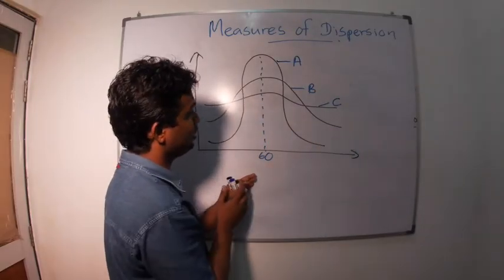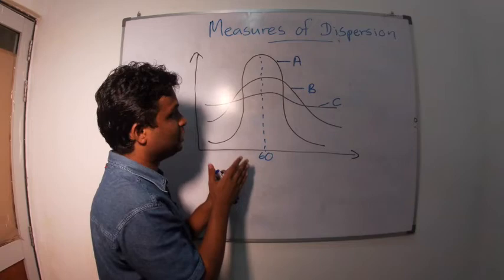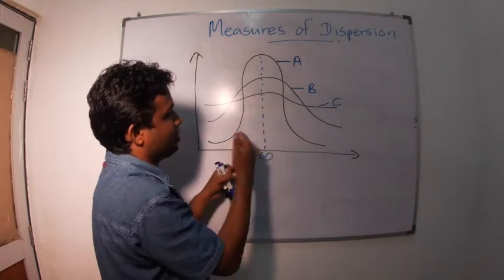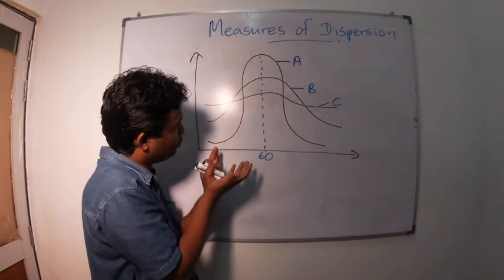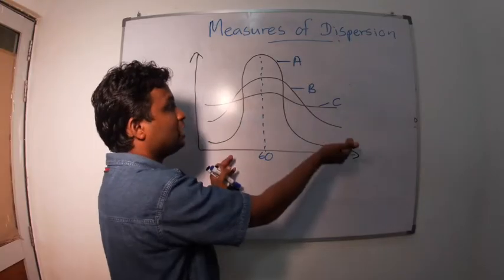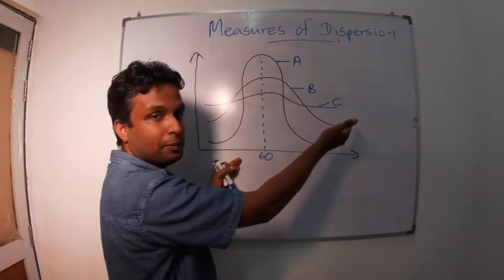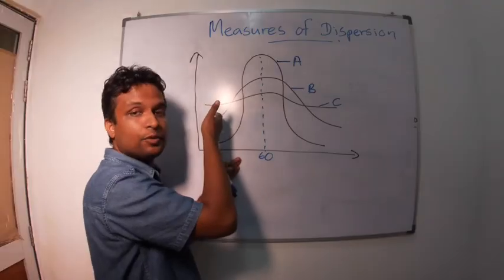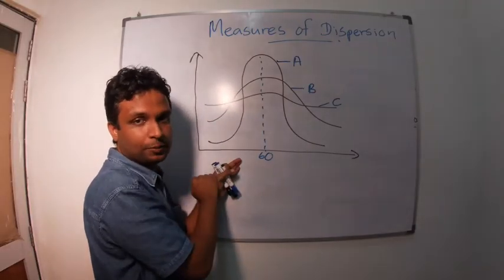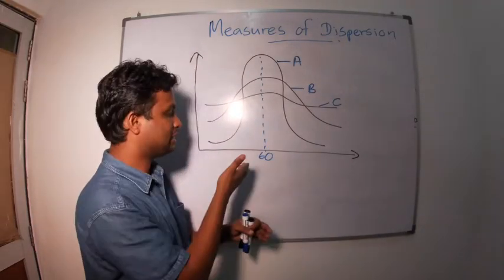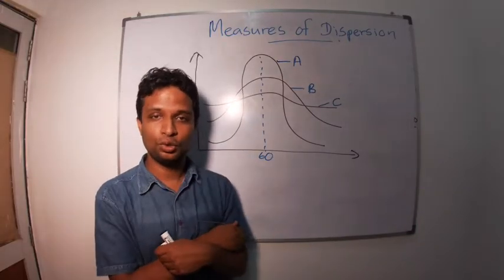Look at class C. Class C is almost flat, but again it's a kind of normal distribution. They have a very high number of students with very high marks and a very high number of students with low marks. Totally different classes with the same average. What to do now?